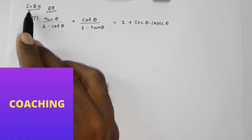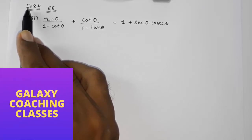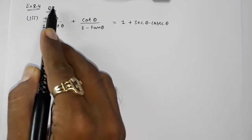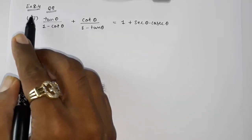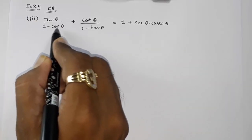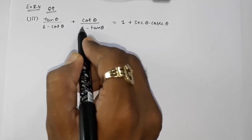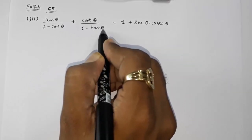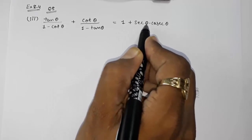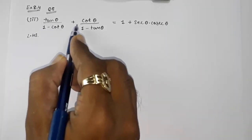Hello friends, today we are going to solve CBSE class 10th maths exercise 8.4 question number 5 sub-question 3: tan θ upon 1 minus cot θ plus cot θ upon 1 minus tan θ is equal to 1 plus sec θ into cos θ. So let us start with the LHS.